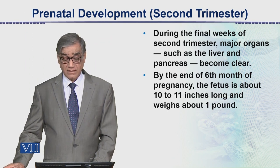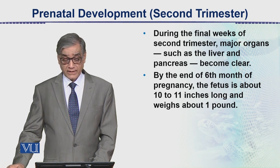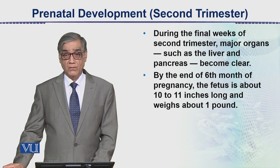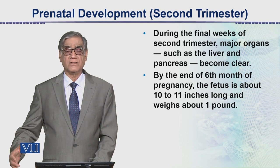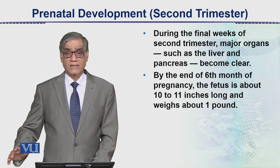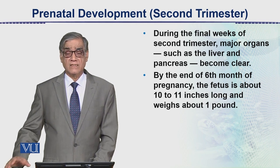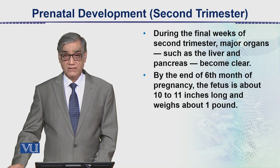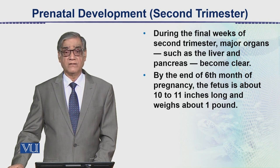During the final weeks of the second trimester, major organs such as the liver and pancreas also become clear. By the end of six months of pregnancy, the fetus is about 10 to 11 inches long and weighs about one pound. After this, in the final trimester, growth becomes very fast and externally one can observe the second trimester changes in the human baby.